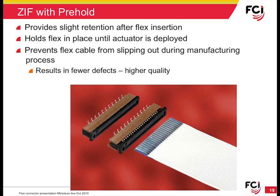FCI's 0.2 mm pitch XL series has a different way of ensuring proper cable insertion. The system uses a different cable cut configuration, which allows the operator to visually check proper cable location and insertion using a cable pre-hold before the actuator is closed. One of the issues with ZIF connectors is that zero insertion force typically means zero withdrawal force. As a solution, FCI has built in a feature called ZIF with pre-hold into many of its connectors. This innovation provides a small amount of retention to the cable, holding it in place until the actuator provides the final locking, preventing the cable from unintentionally slipping out and resulting in unnecessary rework.